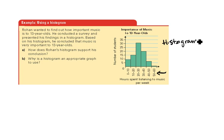He also correctly did not use a circle graph since he didn't want to show how things are divided, nor a line or scatter plot to look for trends. So a histogram or bar graph is the most appropriate. His conclusion is that music is very important to 13-year-olds, and his proof is that most students listen between 20 and 40 hours a week, which he could include in his conclusion.